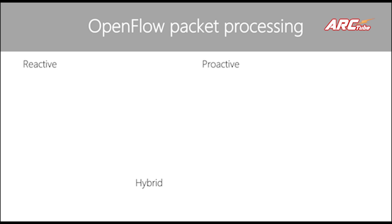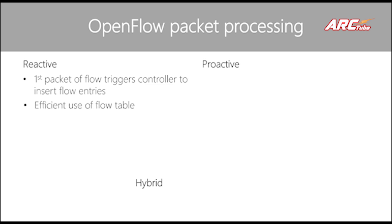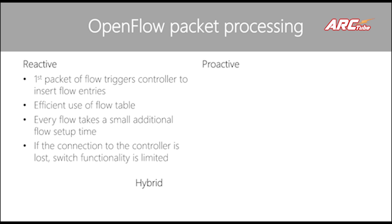In reactive packet processing, the first packet of a flow triggers the controller to insert a flow entry, and then it uses the flow table quite efficiently. However, every flow takes a small additional flow setup time, because the flow table is empty at the beginning. If the connection to the controller is lost, switch functionality is limited, since in reactive mode the network element is fully dependent on the controller to get the required instructions.